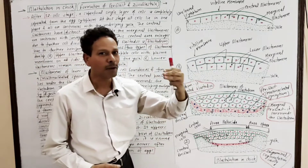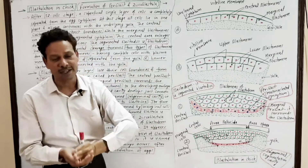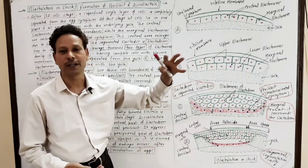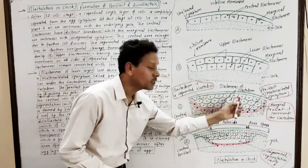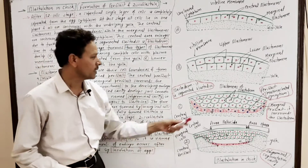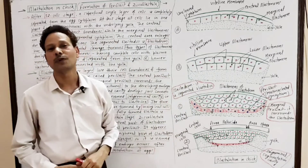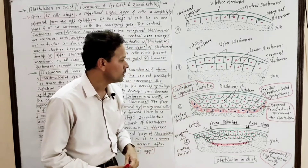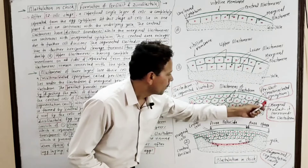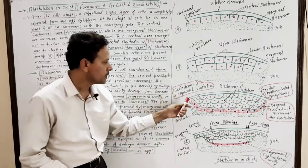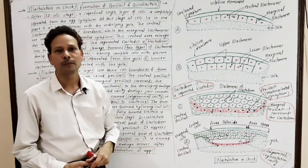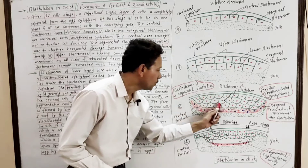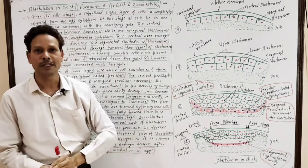This entire process occurs in the germinal disc — the blastodisc — which gets segmented, in which new cells are added. As a result, a mass of blastomers is formed, and this entire structure is the blastoderm. In the blastoderm, the lower cells close their cell boundaries.